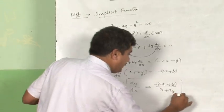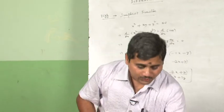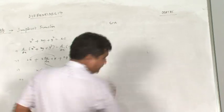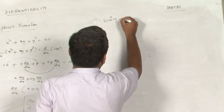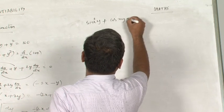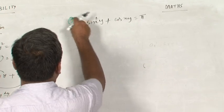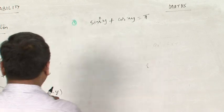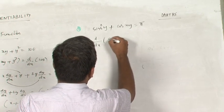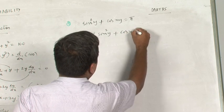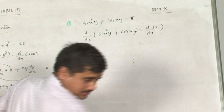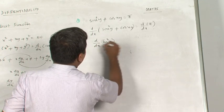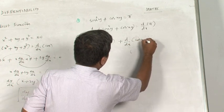This is differentiation of an implicit function. For the second implicit function problem, take sin²y + cos(xy) = π. Differentiating directly: d/dx of sin²y plus d/dx of cos(xy) equals differentiation of π, which is 0.